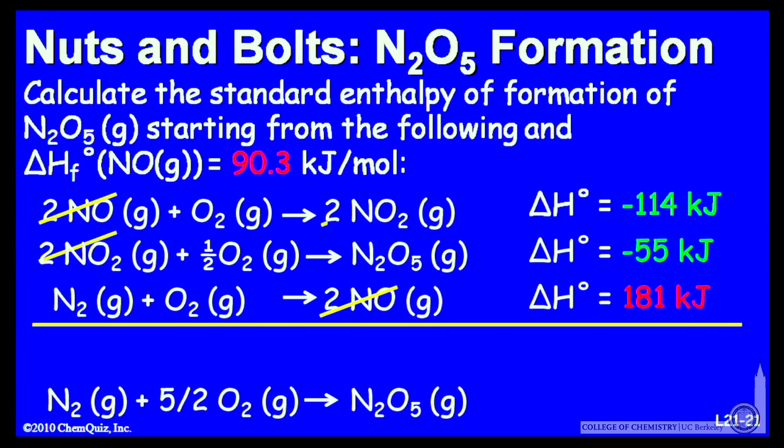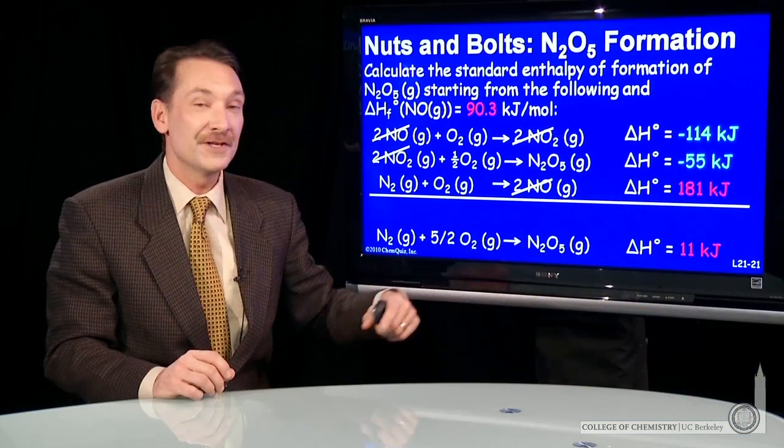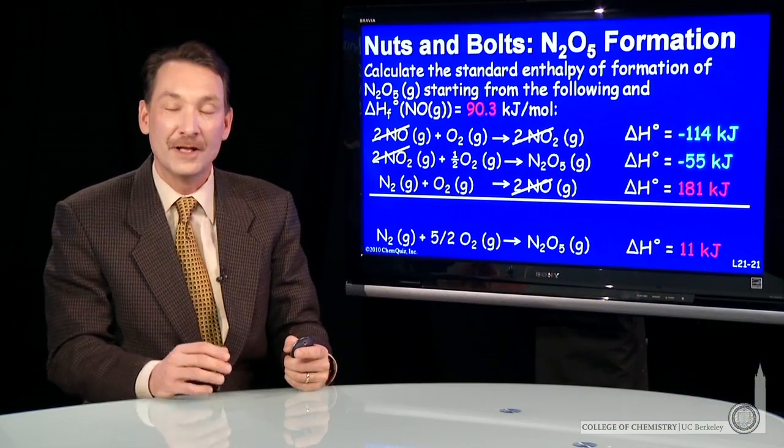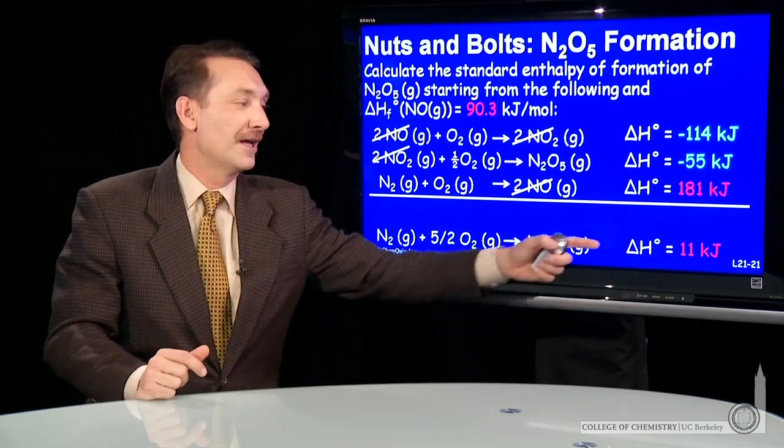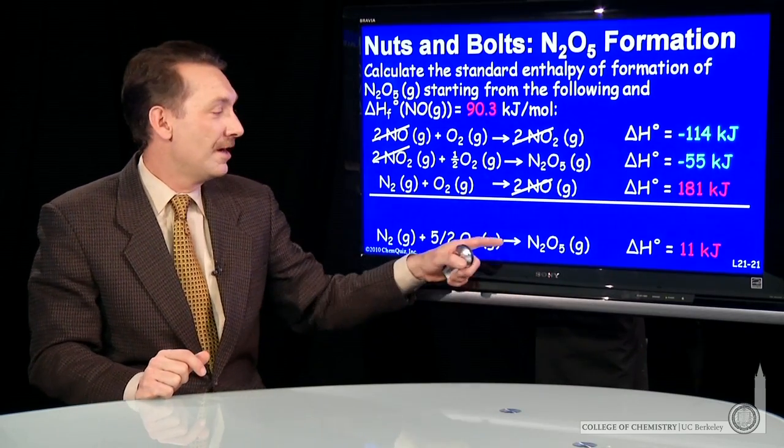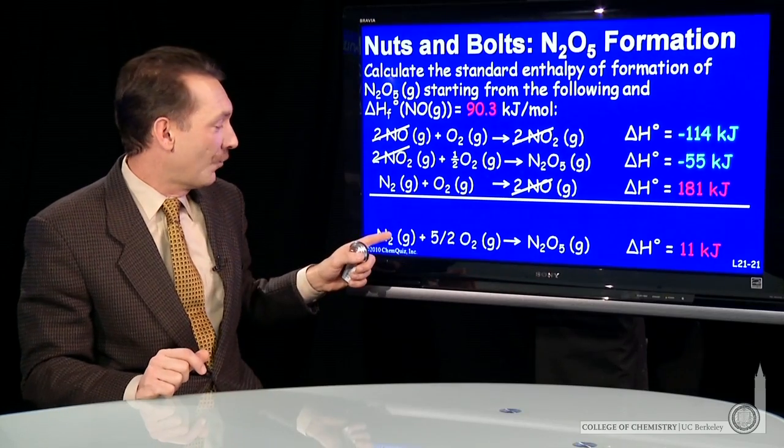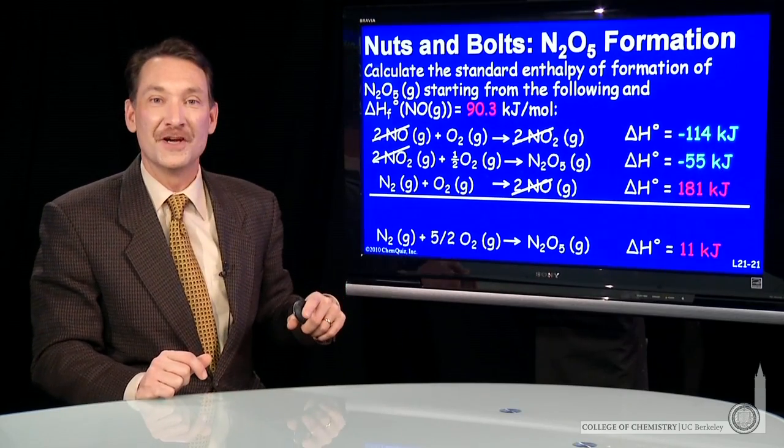There's two moles here of NO2 and two moles here of NO2. Those cancel. The rest add to give me a mole of nitrogen, 5 halves mole of oxygen, and a mole of N2O5. I can add my three enthalpies, and the enthalpy for this reaction is 11 kilojoules per mole. It's slightly endothermic. I have to absorb 11 kilojoules per mole for every mole of N2O5 that I form from the elements in their standard states.